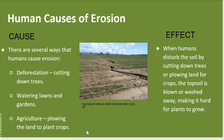What are the effects? When humans disturb the soil by cutting down trees or plowing land for crops, the soil is blown or washed away, making it hard for plants to grow.